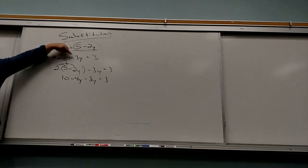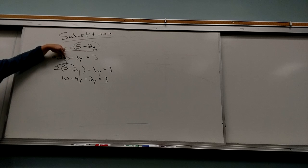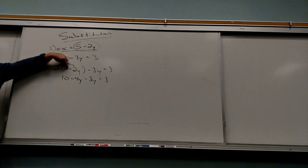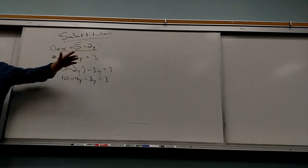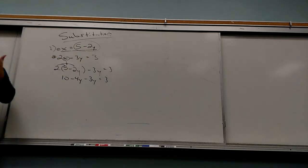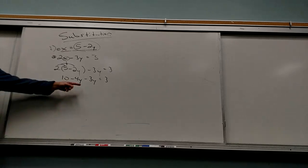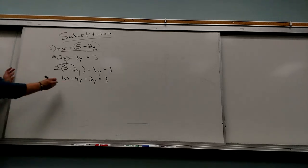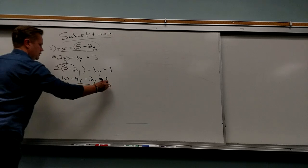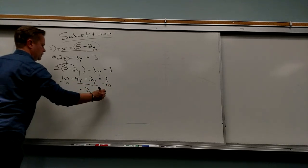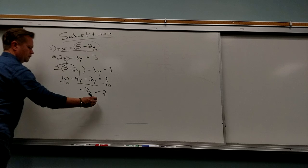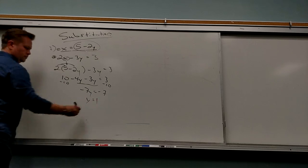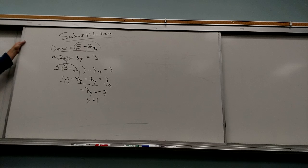The biggest mistake I see is people forget this term when they do the replacement. It's twice X minus 3Y — it has to be there, or else you're solving some other problem. This becomes really nice — subtract 10, get the terms together, I get negative 7Y equals negative 7. So Y equals 1.